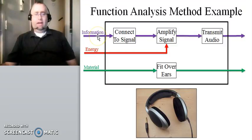So the information is the signal that comes from your MP3 player or your computer or whatever it is that crosses the system boundary into the headphones. So here I say connect to signal, so the headphones actually have to somehow make a physical connection, like a jack or a USB port, to the source of the signal that they're trying to send to the user.